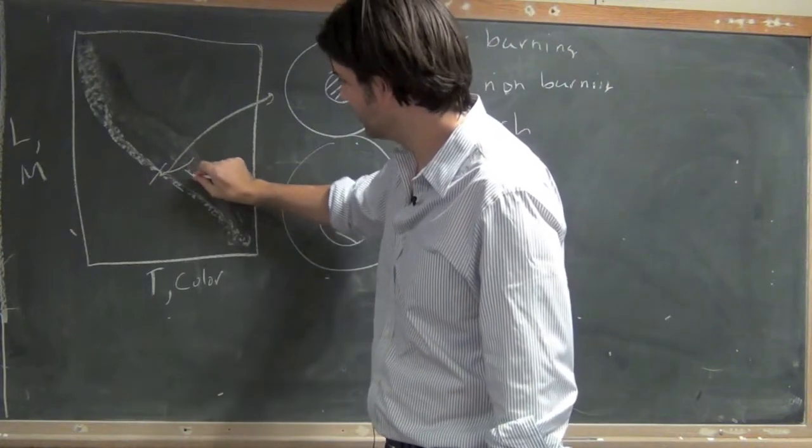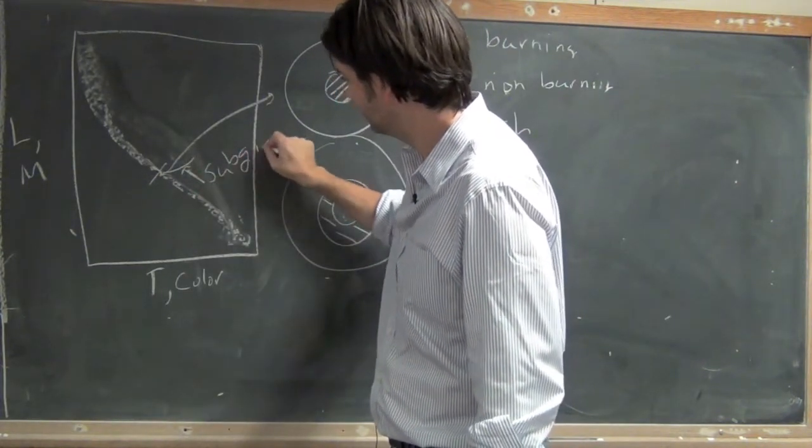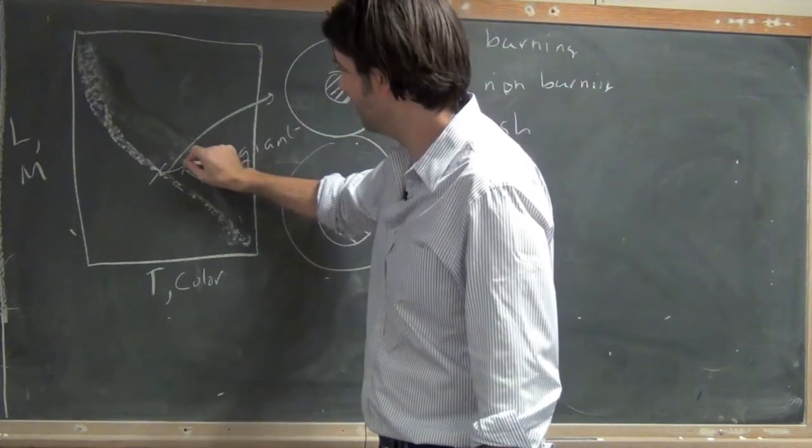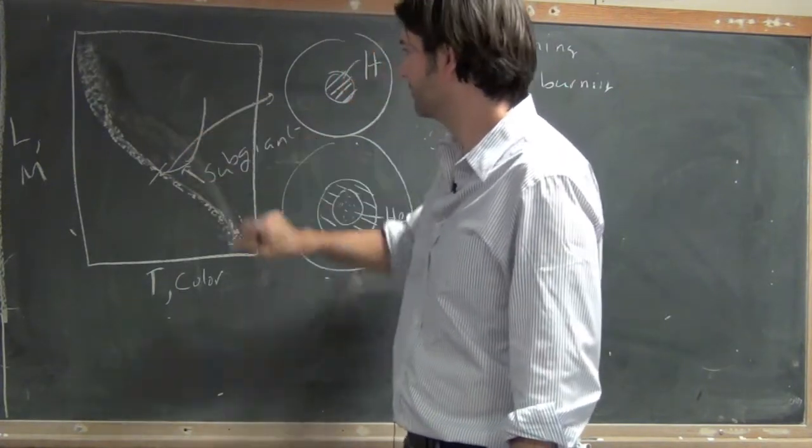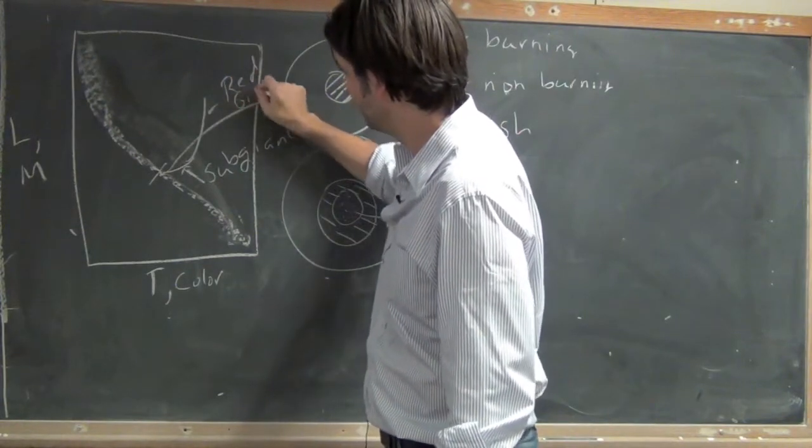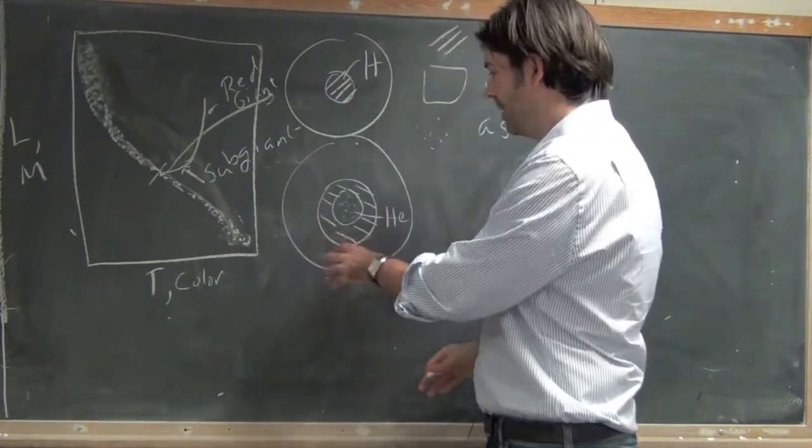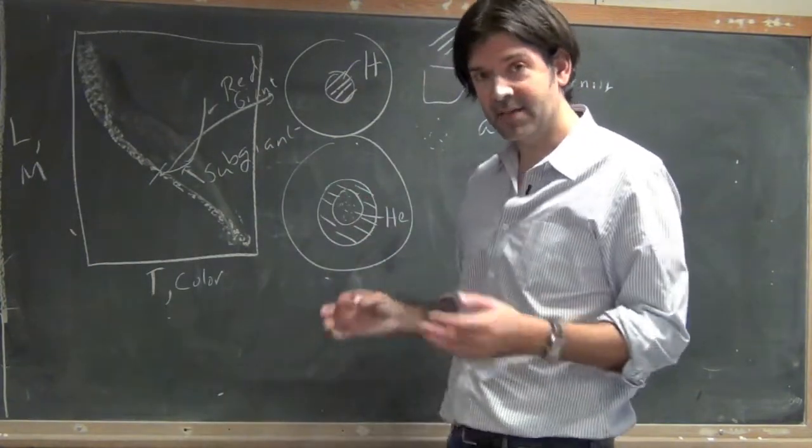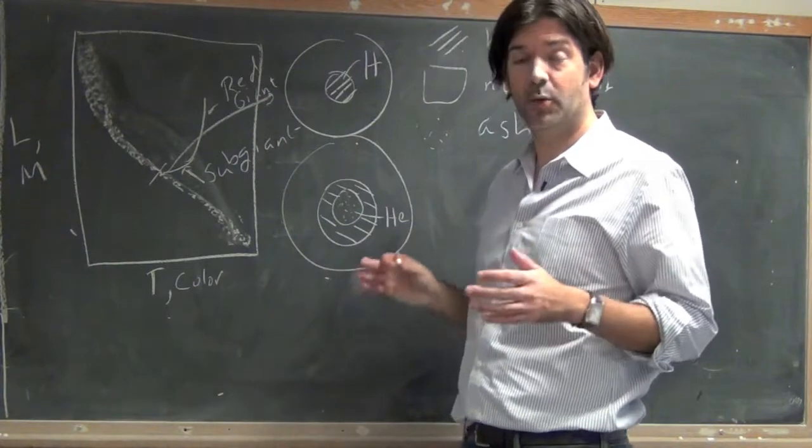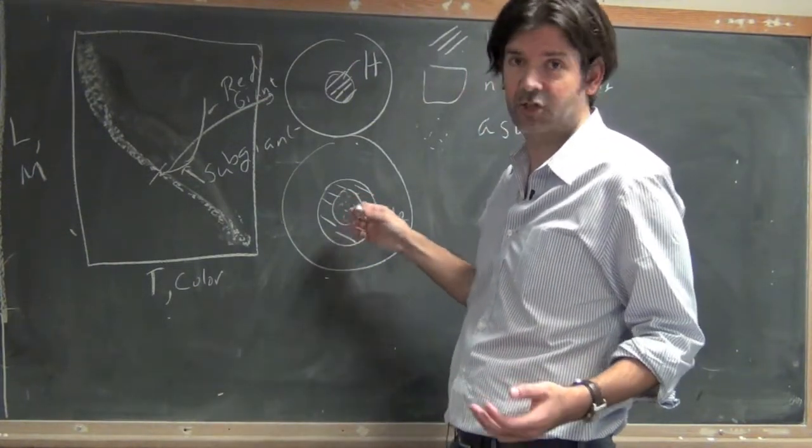You're going to move off the main sequence into this region here, which is called the subgiant branch, and up along the red giant branch. And in these phases, the heaviest element in the star is helium, the heaviest element that you are burning is hydrogen, and you are not burning in the core. You have an ashen core.